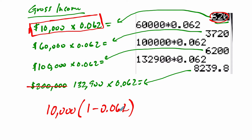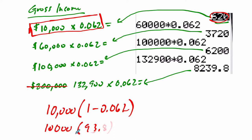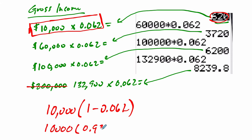So now you take off 6% from 100 is 94, and then the 0.2 makes it 93.8. So this is going to be essentially 10,000 times 0.938. All that number is saying is that you've taken away a little over 6%, and what remains is about 93.8% of the amount you had.